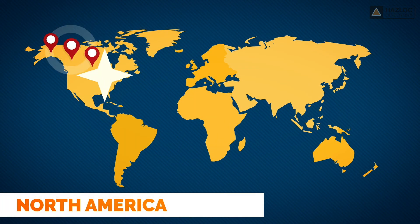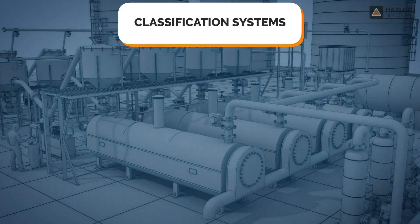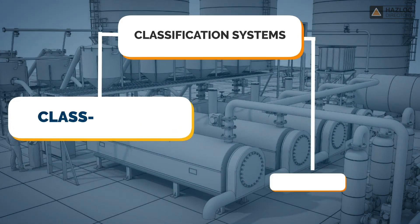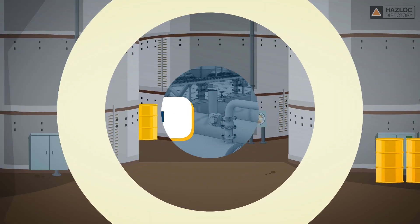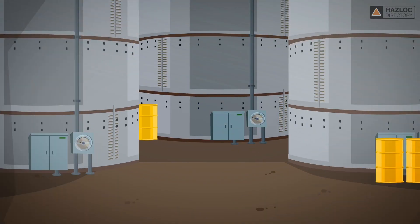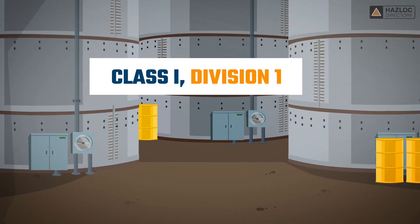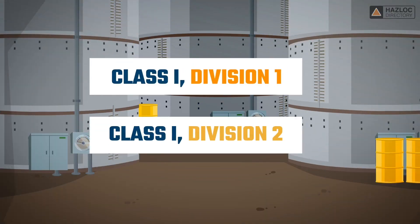Hazardous locations are classified in North America using two different classification systems: the class division and the zone systems. Class 1 Division 1 and Class 1 Division 2 are two such classifications for gas explosive atmospheres.